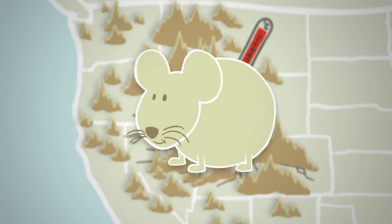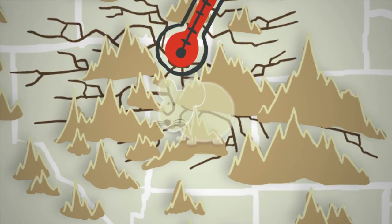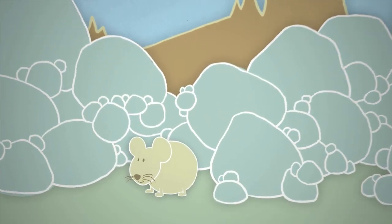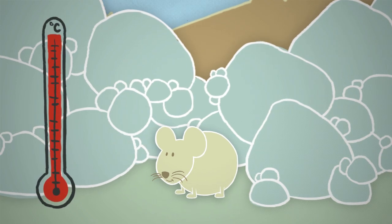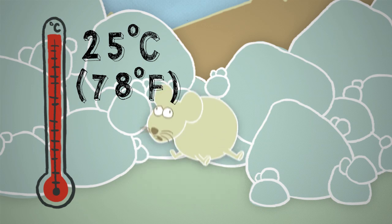Take the case of the pika. These little guys are a relative of the rabbit, and they live on high alpine slopes in Utah and other western states. Pikas live there because they're sensitive to heat. If the thermometer tops 25 degrees Celsius, that's about 78 degrees Fahrenheit, they can quickly overheat and die.